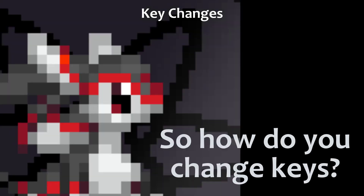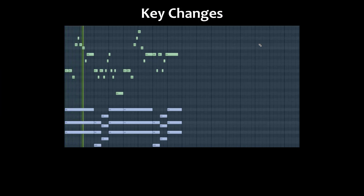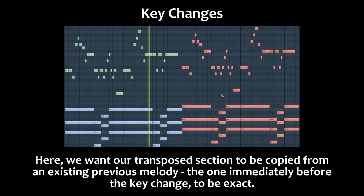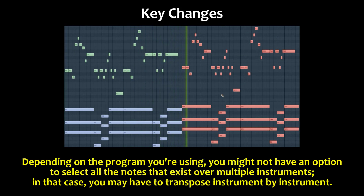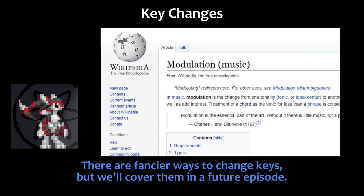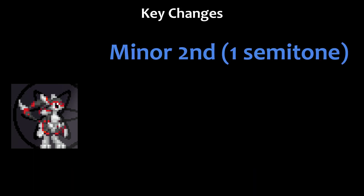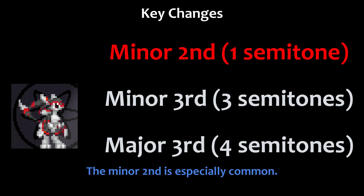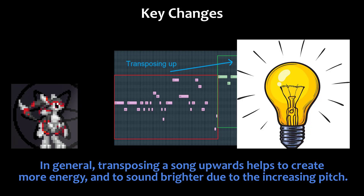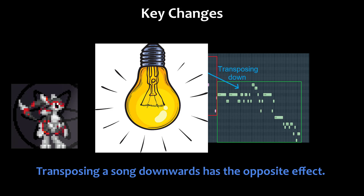So, how do you change keys? There are fancier ways to change keys, but we'll cover them in a future episode. The most common intervals to transpose by are minor second, minor third, and major third. The minor second is especially common. In general, transposing a song upwards helps to create more energy and to sound brighter due to increasing pitch. Transposing a song downwards has the opposite effect.